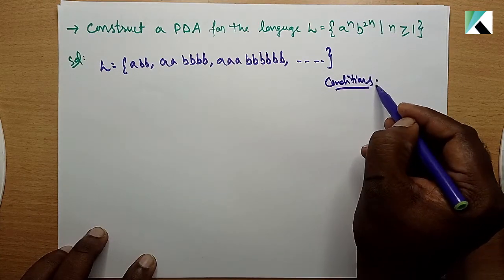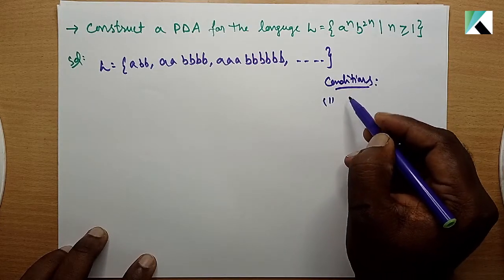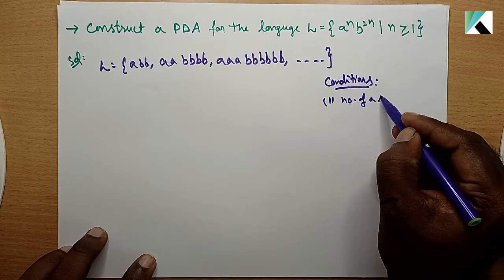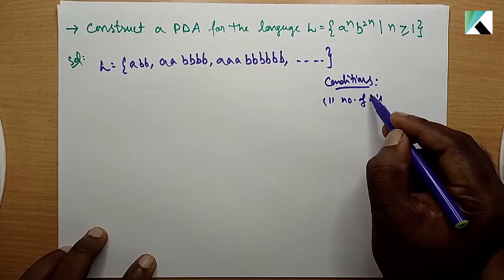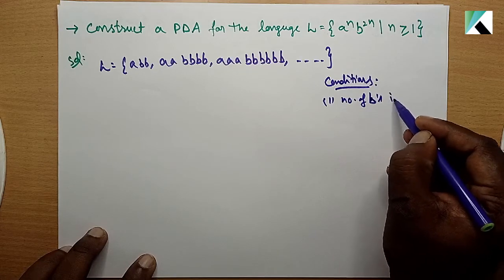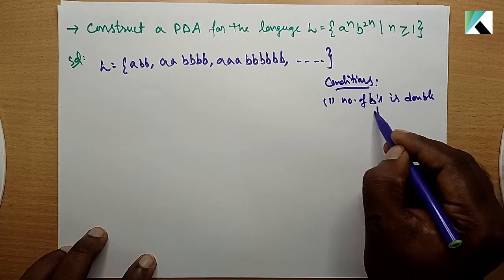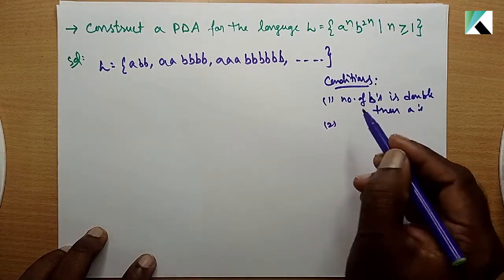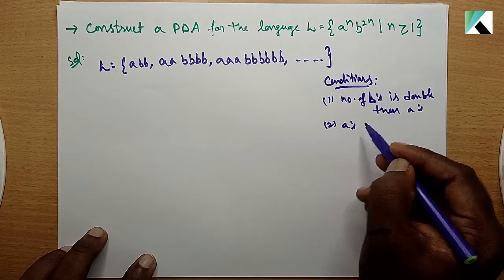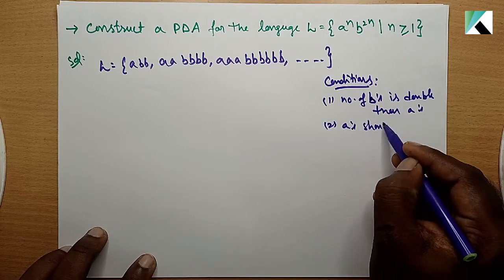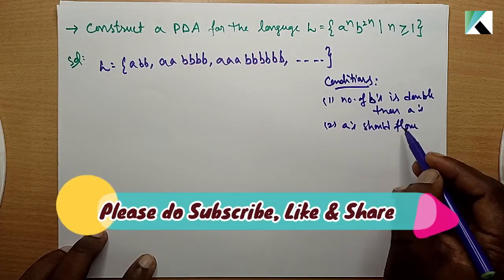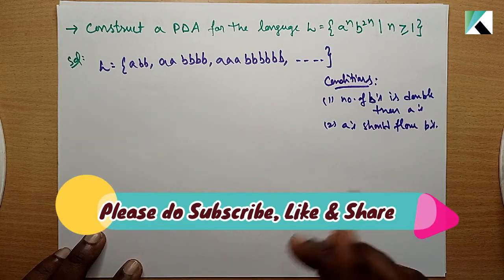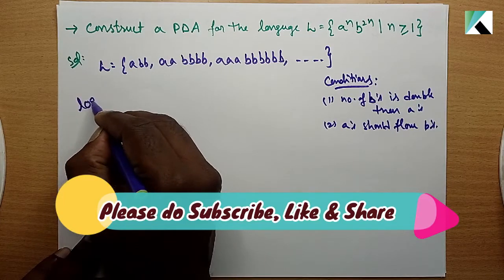The conditions are: number one, the number of b's is double the number of a's. Second, a's should follow b's. Based on this you have to find out the logic.